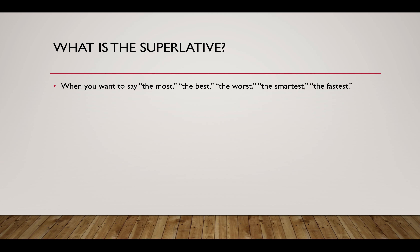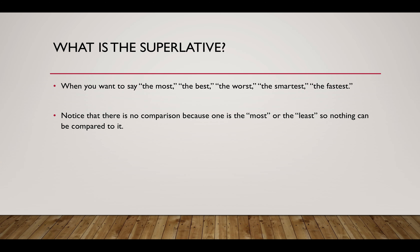First of all, what is it? When you say the most, the best, the worst, the smartest, the fastest — this is what the superlative is. There is no comparison because you are either the most or the least, the best or the worst. So this is a little bit different.